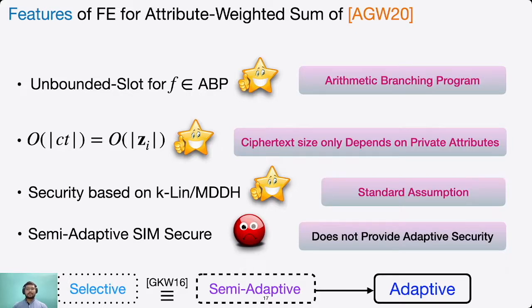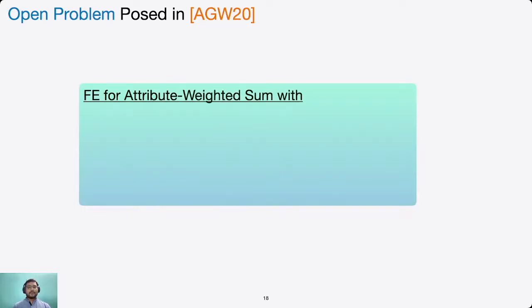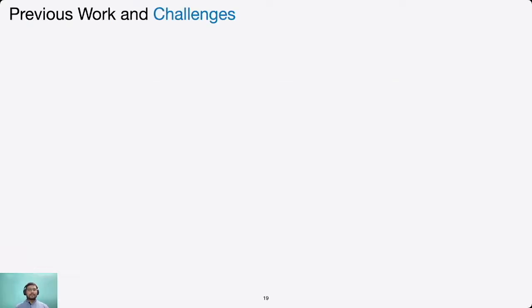Since existing transformations from semi-adaptive to adaptive security require the underlying scheme to support general circuits, AGW20 posed an open problem: how to construct an FE for attribute-weighted sum with unbounded slots for ABP, having compact ciphertext and adaptive simulation security based on standard assumptions. I will now present some previous works and the challenges in solving this open problem.